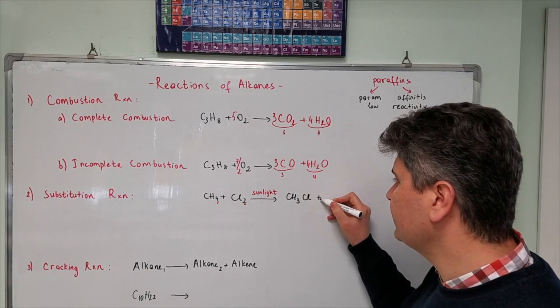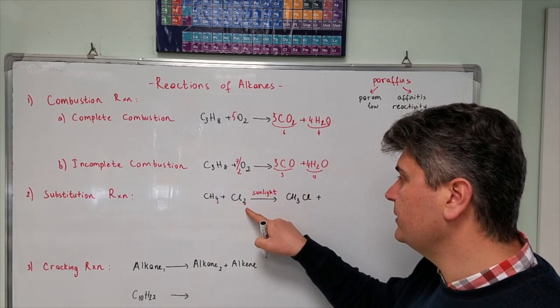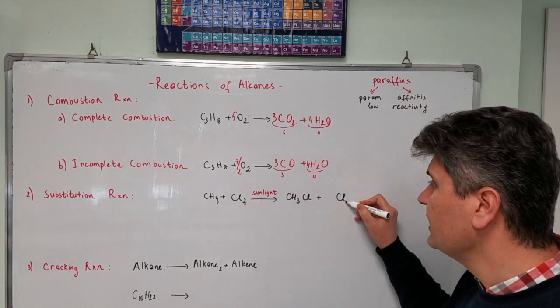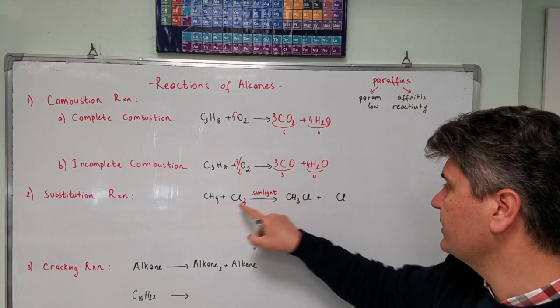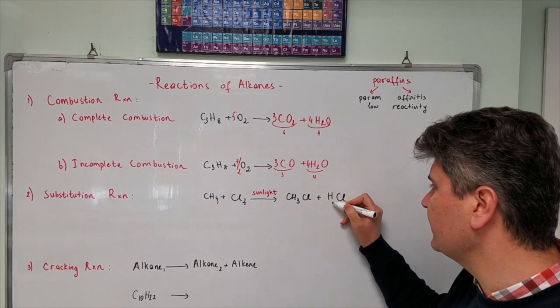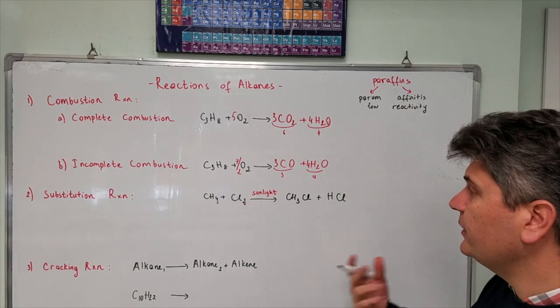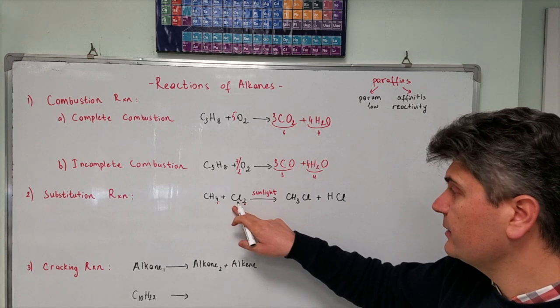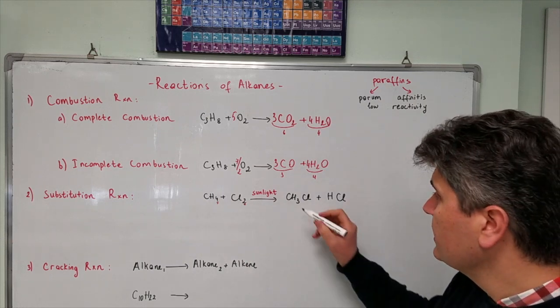Then, the second compound, it was Cl2 at the beginning. One Cl is gone, so one Cl is left. And one hydrogen came here, so it's going to be HCl in here. But in here, if you have enough chlorines, this might give you a series of reactions.